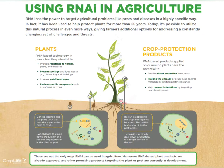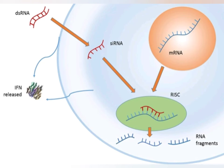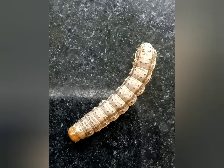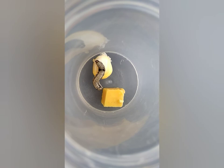RNAi-mediated crop protection is one such approach that targets insect pests, and nanoparticle-mediated delivery improves uptake and stability of the dsRNA. Spodoptera frugiperda, or fall armyworm, infests corn, grasses, rice, sorghum, sugarcane, wheat, other vegetables, and many other crops.